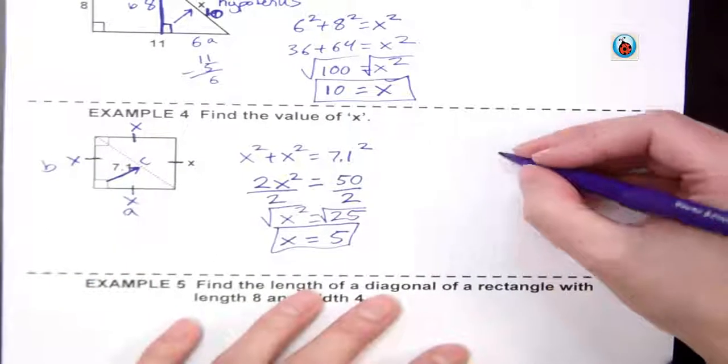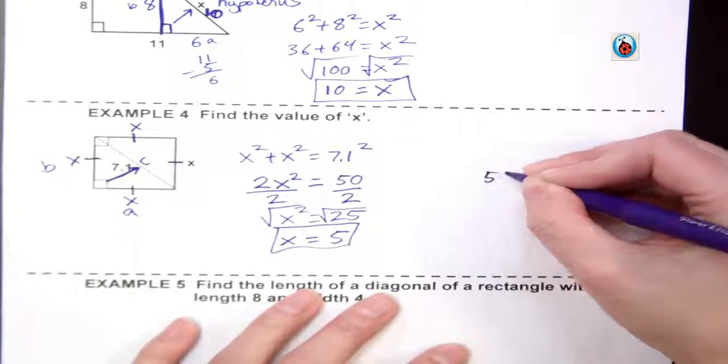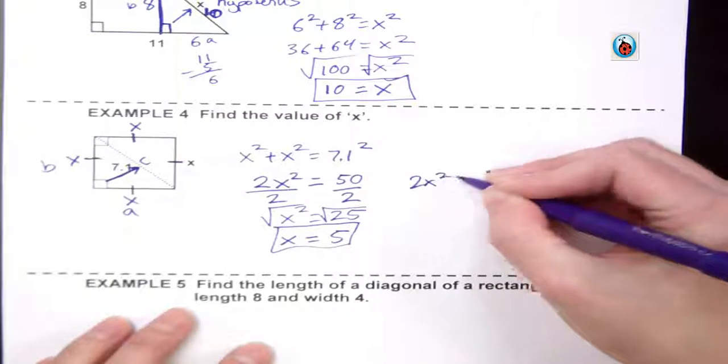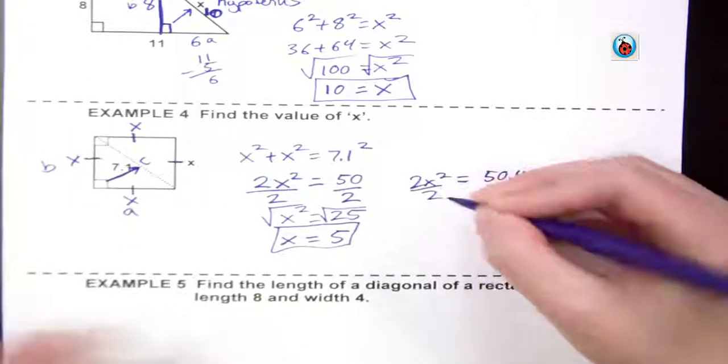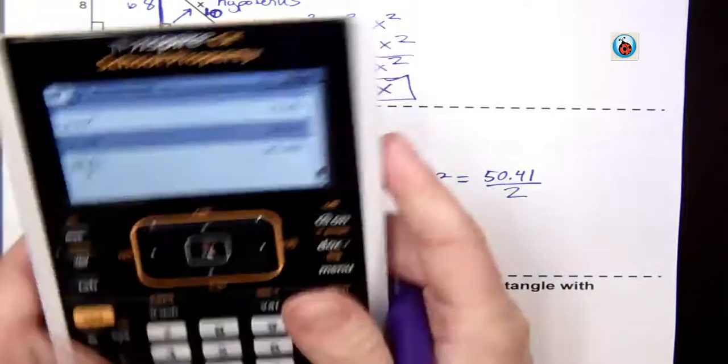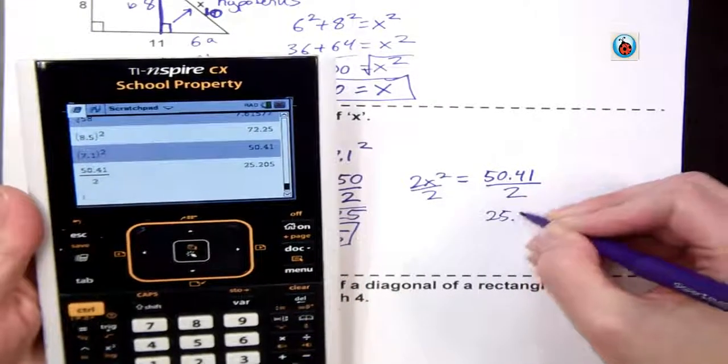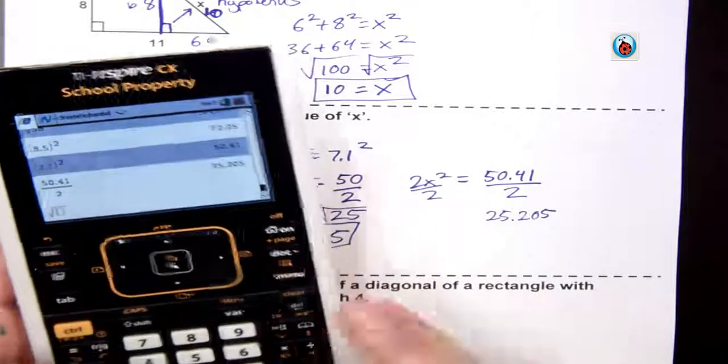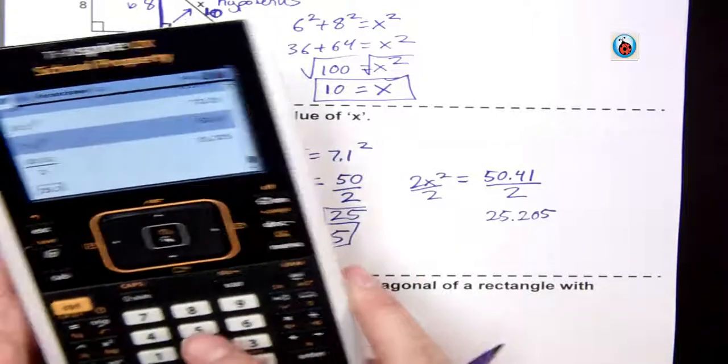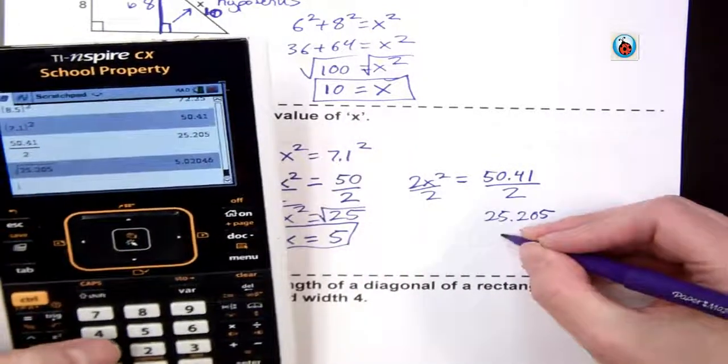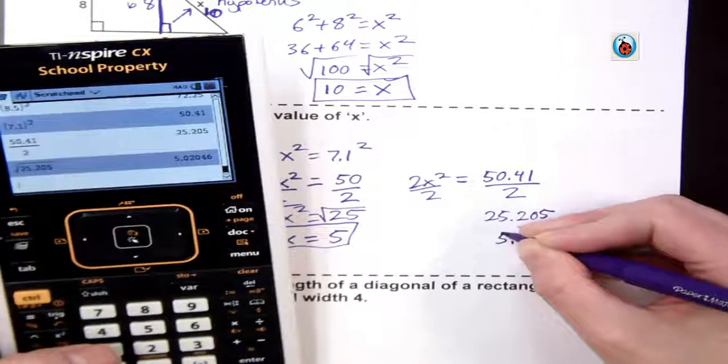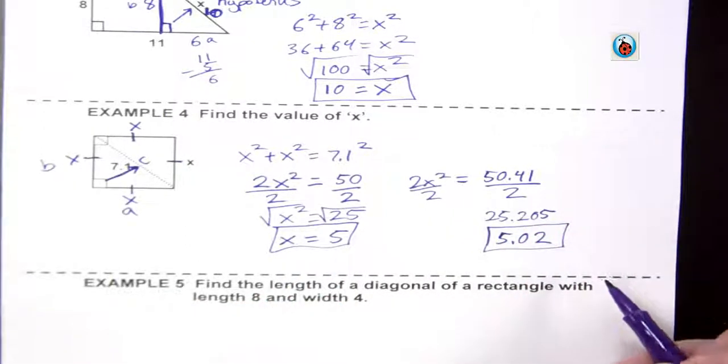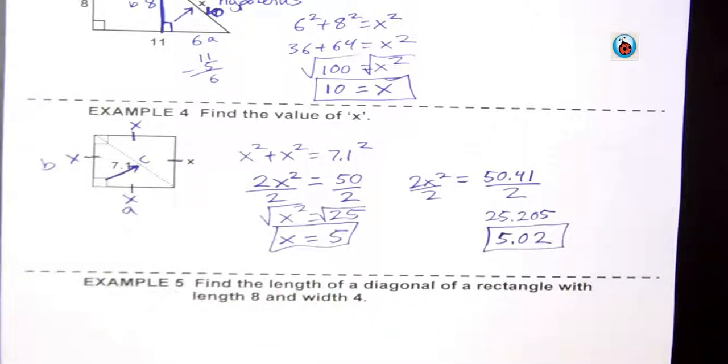Just to show you what would happen if I hadn't rounded, that would give me 50.41. I would then divide that by 2, which gives me 25.205. When I take the square root of that, it gives me the answer of 5.02. So depending where you round, and since a lot of your tests are multiple choice, you might see either answer. It'll just make a small difference in the decimals, depending where you round.